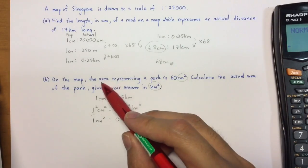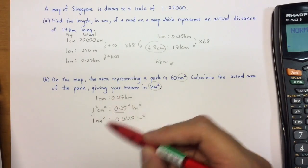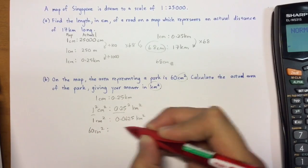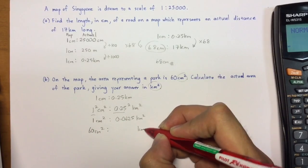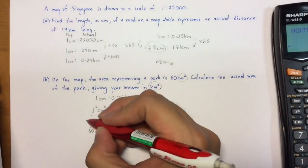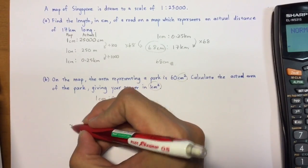So the question now is that, on the map, if it's 60 cm², what is the equivalent value in km²? So now this is easy. In fact, much easier than the previous one. To change from 1 to 60, I'm just going to multiply by 60 on this side.